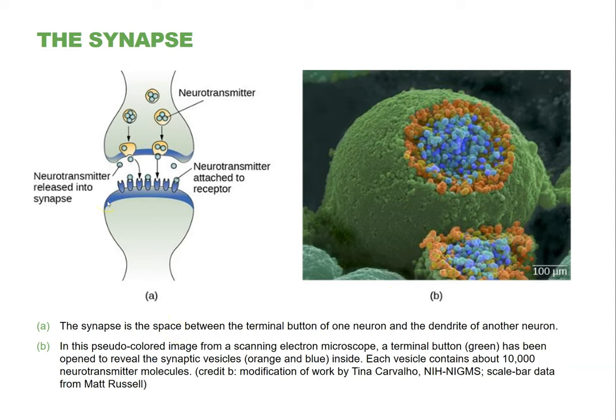Neurons don't technically connect — they're not actually attached to other neurons, which is kind of a fascinating thing. Instead, there is a small gap from one neuron to the next, and in that gap a lot of really important things happen. The area where it looks like they connect is called the synapse, and the gap between them is called the synaptic gap or the synaptic cleft.